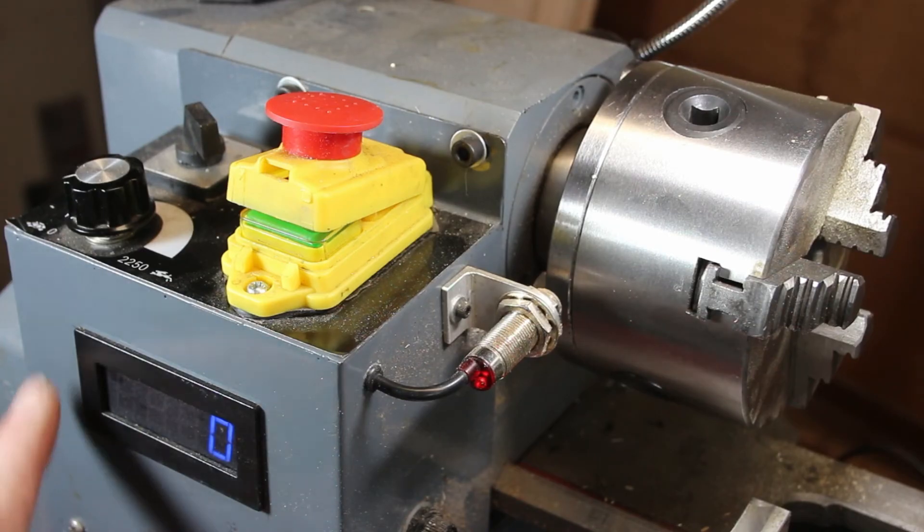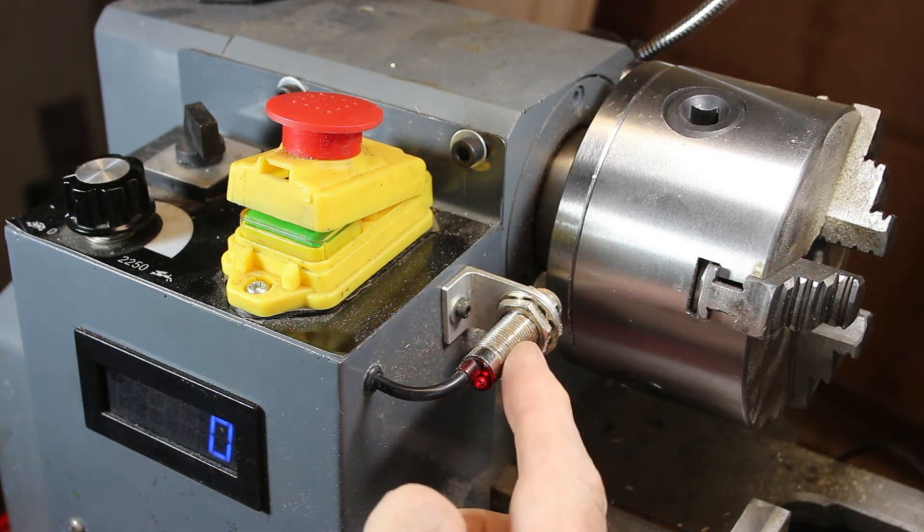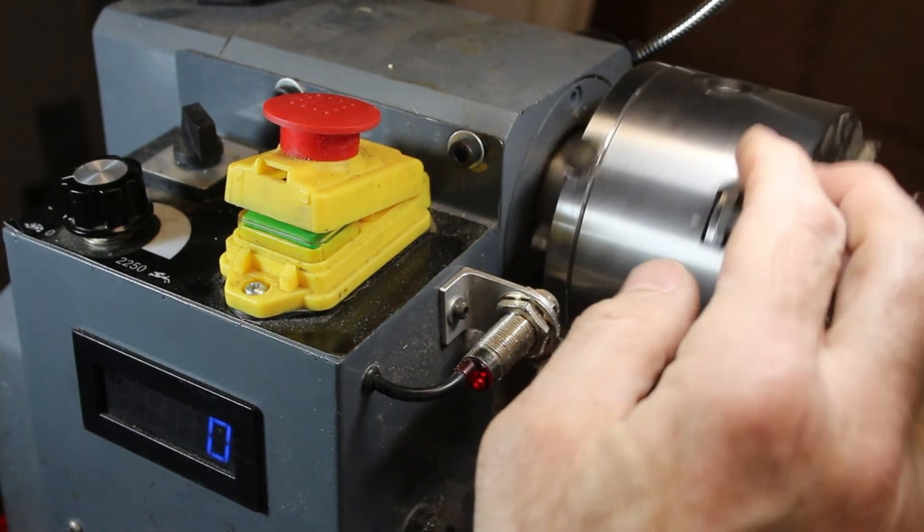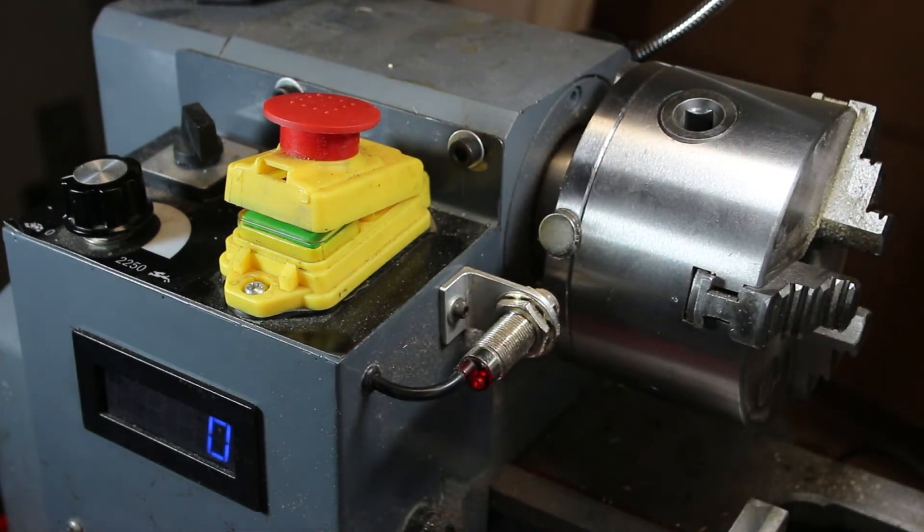Here's the tachometer mounted to the front face of the control box. This one is blue. They come in green and red. The sensor is mounted right here onto a little bracket. It's pretty easy to fabricate. And then if I turn this around, you can see that I glued a magnet right here onto the mounting plate for the chuck.